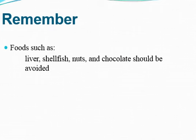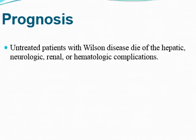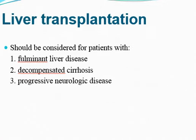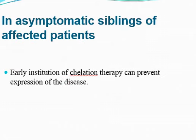Foods such as liver, shellfish, nuts, and chocolate should be avoided in patients with Wilson's disease. Untreated patients have a bad prognosis and may die due to hepatic, neurological, renal, or hematological complications. The prognosis for patients receiving prompt penicillamine therapy is variable and depends on the time of initiation and individual responsiveness. The ultimate modality required in some patients is liver transplant, considered in cases of fulminant hepatic failure, decompensated cirrhosis, or progressive neurological disease. In asymptomatic siblings of affected patients, early start of triethylene therapy can prevent expression of the disease.